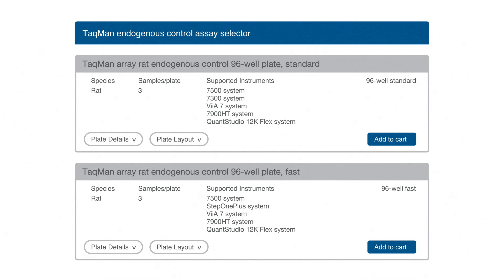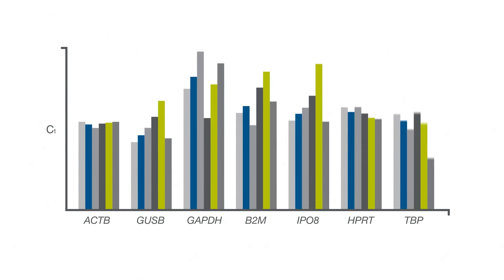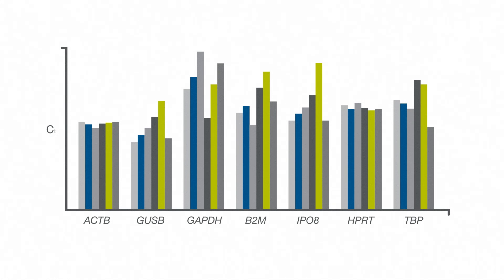If our literature search turned up empty, then we would have to do a test, such as using an endogenous control panel to screen our samples. These panels are made up of 16 to 32 of the most commonly studied candidate genes, and allow multiple samples to be tested quickly and efficiently. Luckily for us, actin and HPRT look like good candidates, since they worked before in a similar experiment.